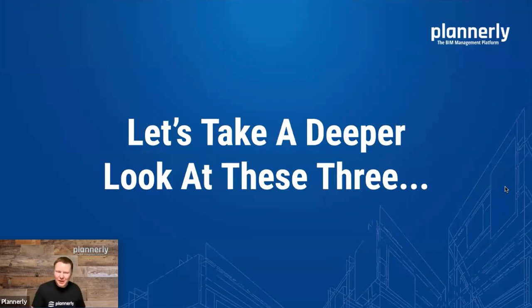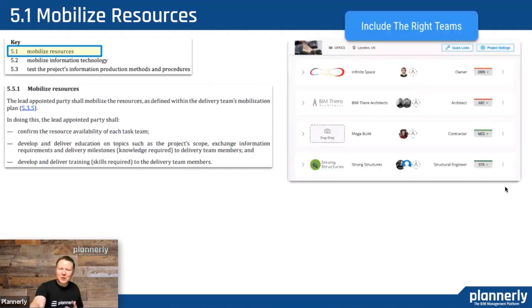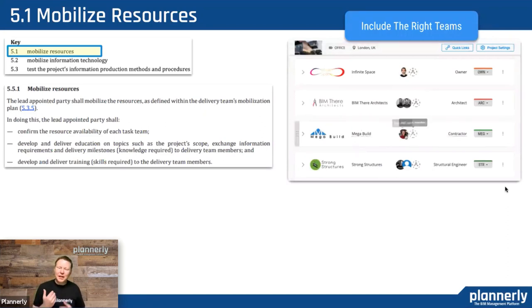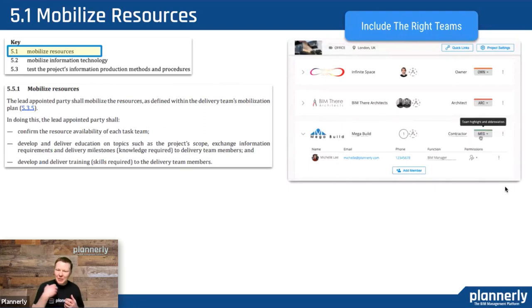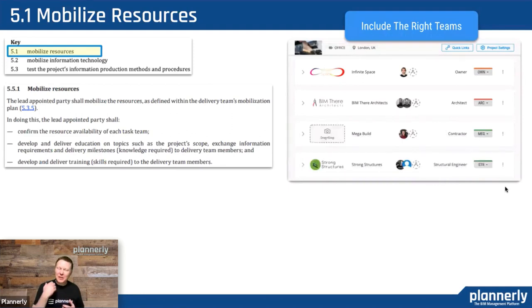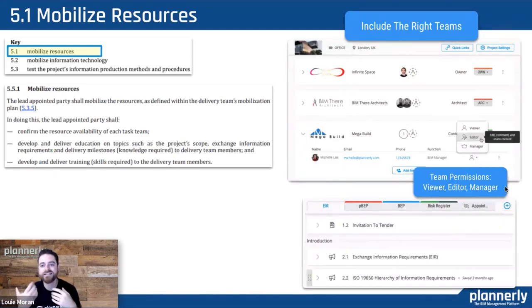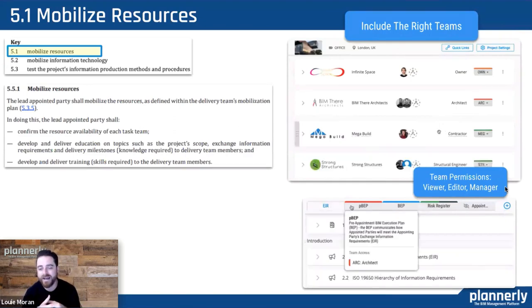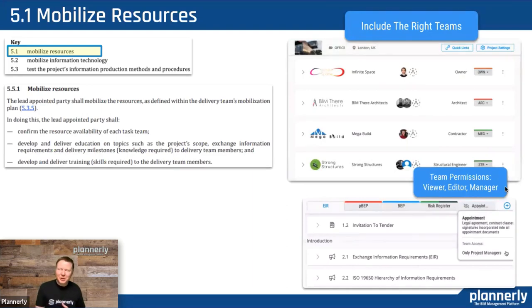There are three key steps: understanding what the resources are, their availability and whether they are trained; having a testing plan in place to make sure technology is ready; and making sure everyone understands the methods, procedures and how to execute on the project. The first one is mobilizing resources — understanding who is going to be available from each team and making sure they are added to the project. You can also define a logo for the team and profile images. We've seen a massive change when people see their own identity, creating a culture between a team that doesn't work together every day.